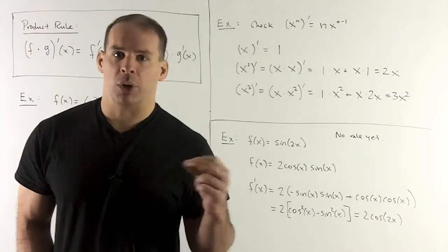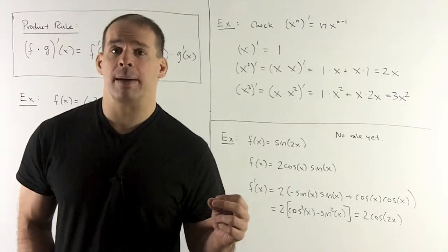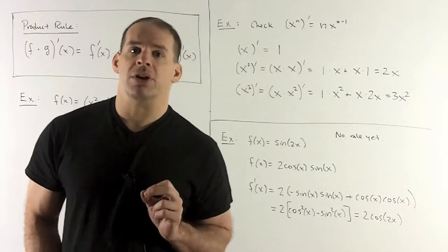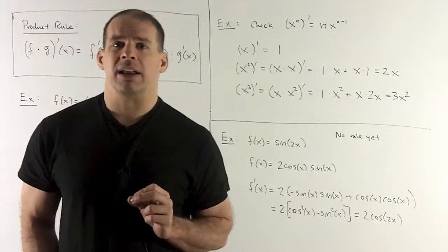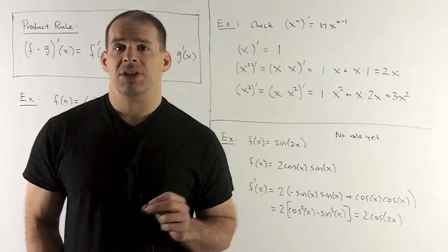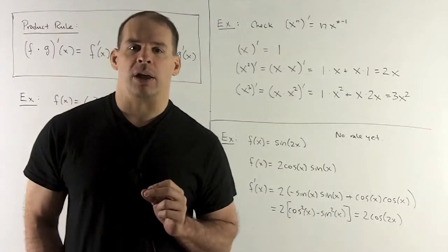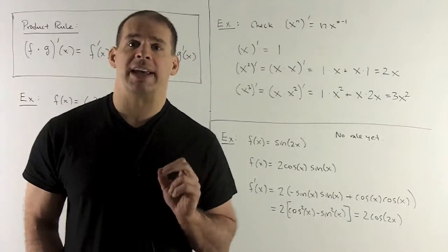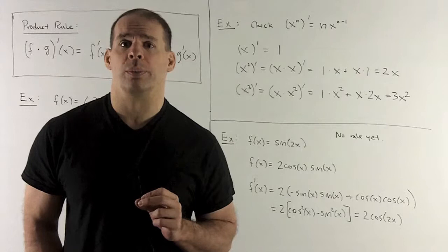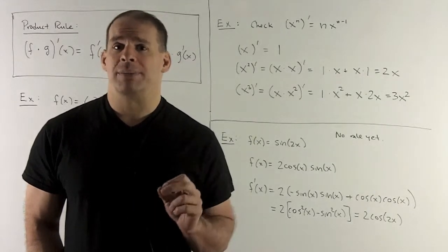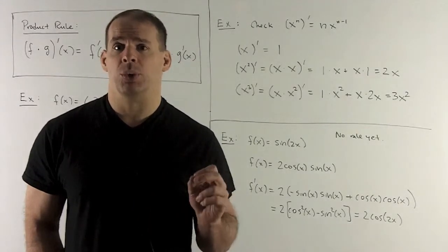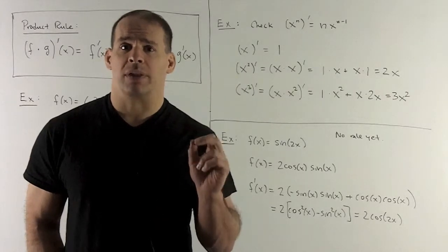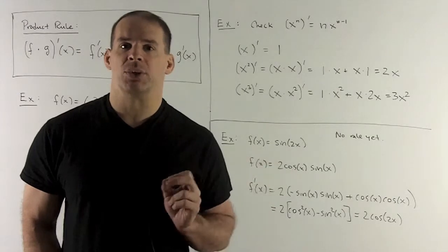Now note we could just keep pushing this forward one at a time and you get the answer that you expect. For something we don't know how to do, let's take a look at f(x) = sin(2x). We don't have a rule yet for how to pull the 2x out, but we can do this if we pull out a trig identity and then apply our product rule. Here I can rewrite sin(2x) as 2sin(x)cos(x).